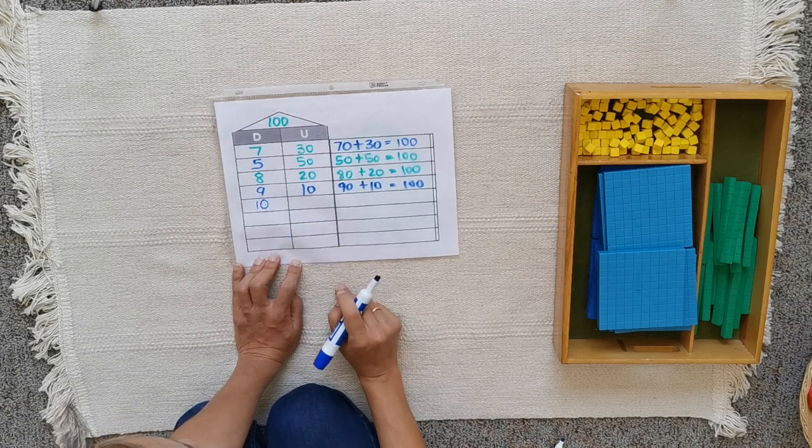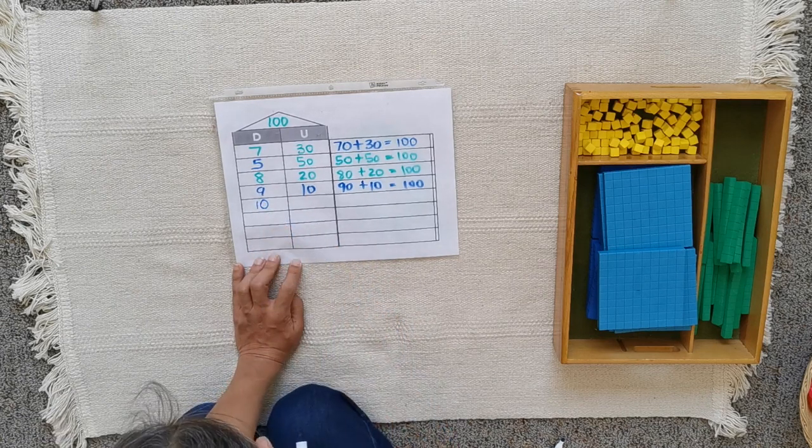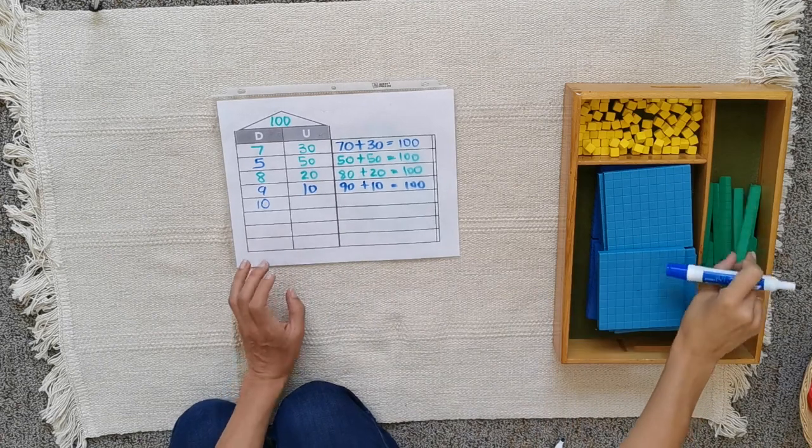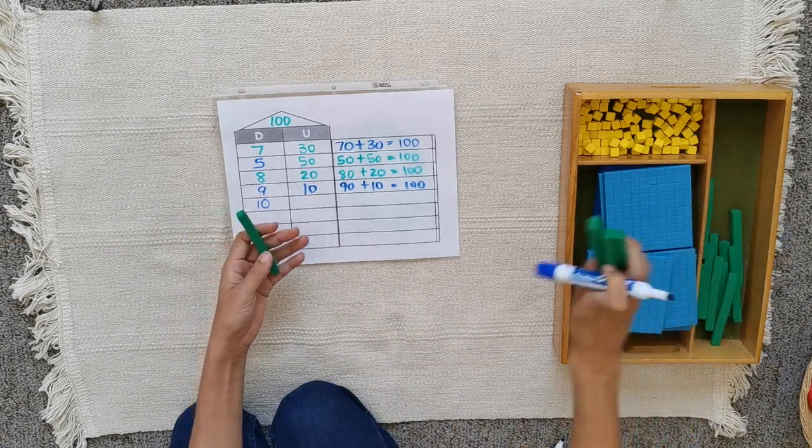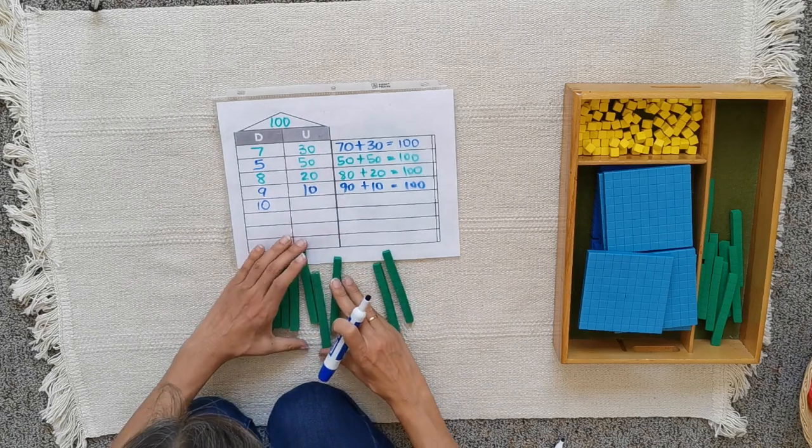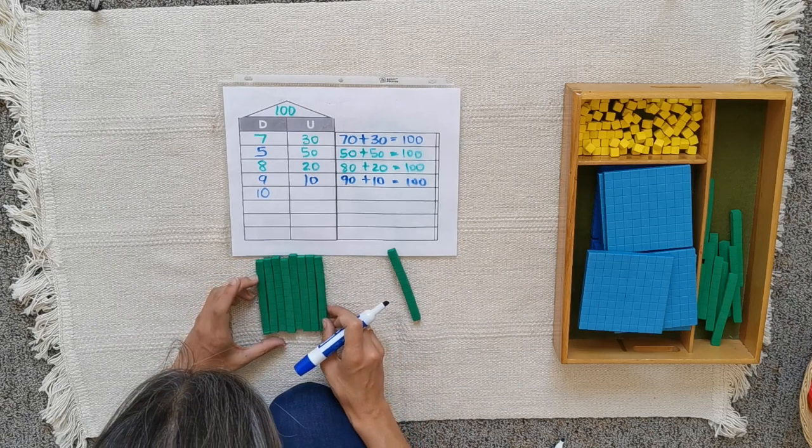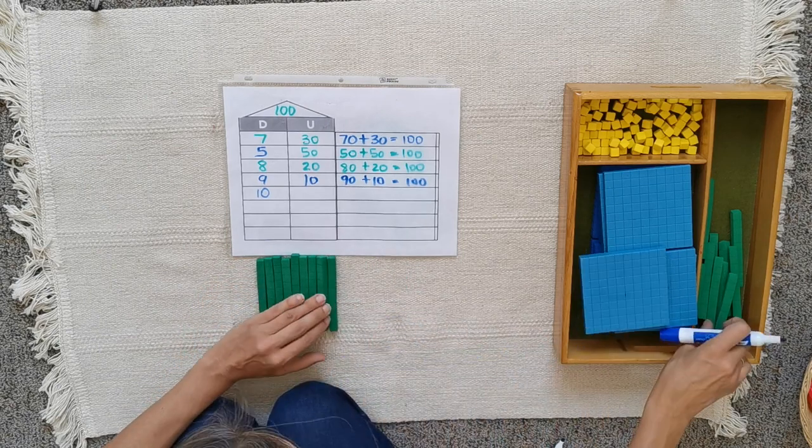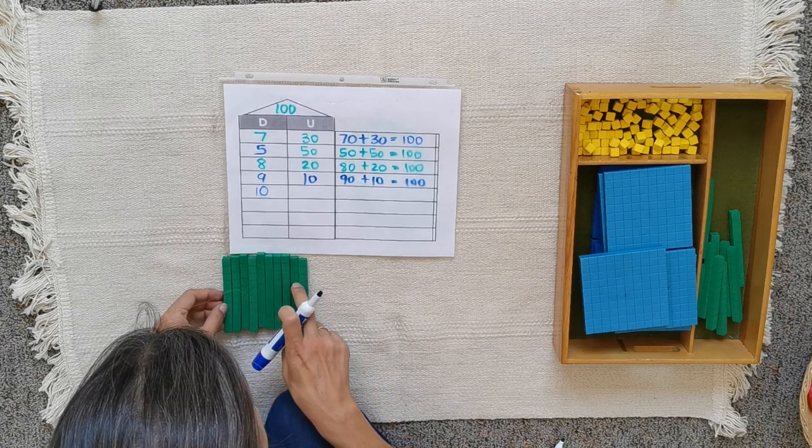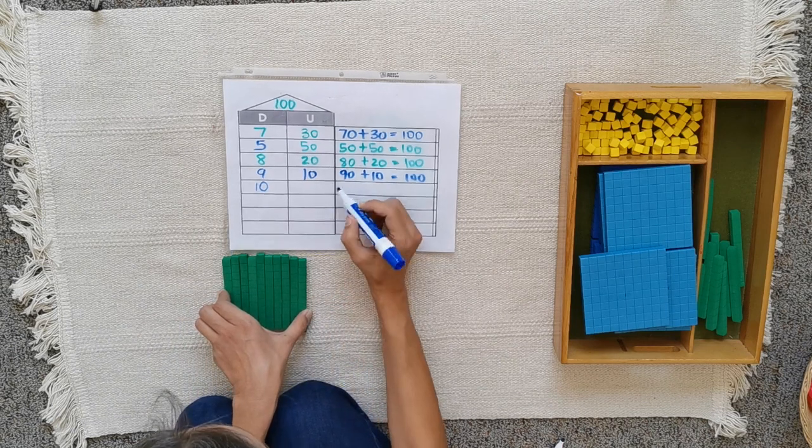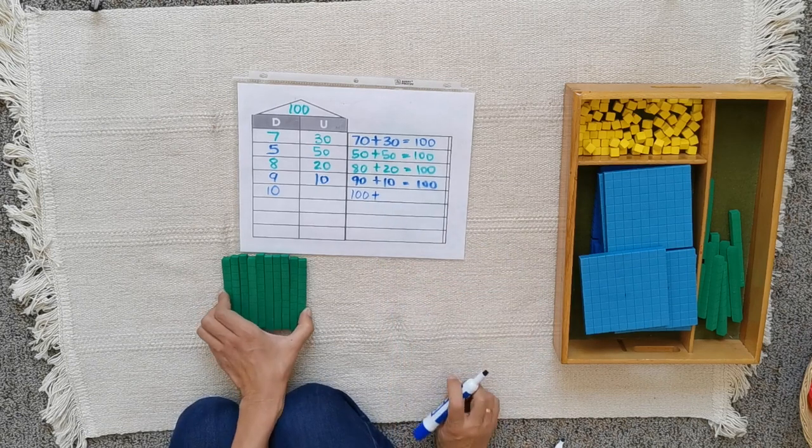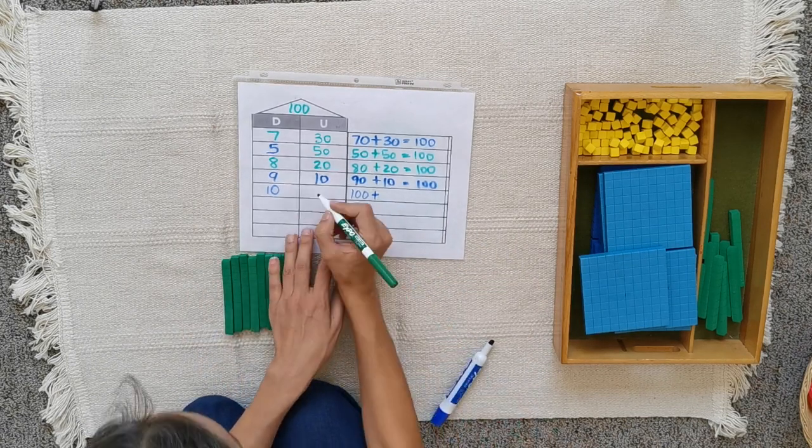A tricky one: ten tens. How many tens are... how many ones are ten tens? Ten of these will make... okay, 1, 2, 3, 4, 5, 6, 7, 8, 9, and 10. I have ten tens. Ten tens is 100. So how many more do I need to arrive to 100? Zero. Nothing.